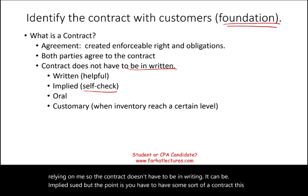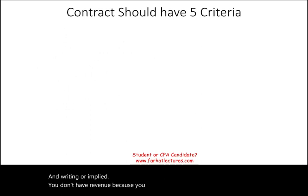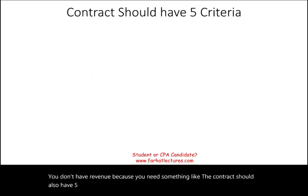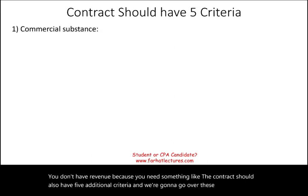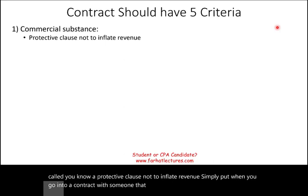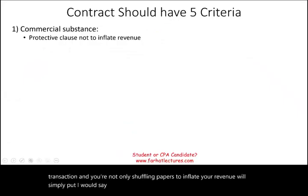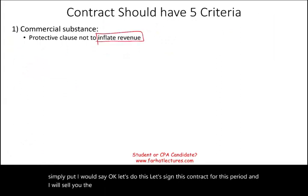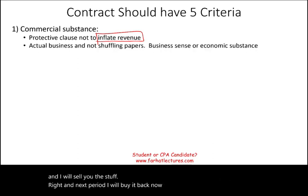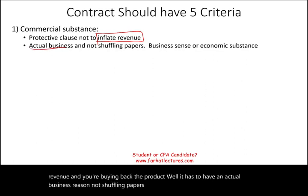The contract — whether written or implied — is the foundation. Without it, you don't have revenue. The contract must also meet five additional criteria. First is commercial substance, sometimes called a protective clause against revenue inflation. Simply put, the contract must represent an actual business transaction. You cannot just shuffle papers — for example, selling goods this period and buying them back next period — to inflate revenue. The transaction must have a real business reason and economic substance.